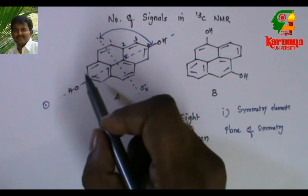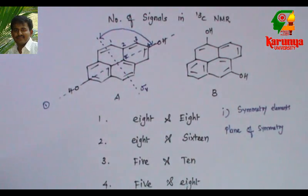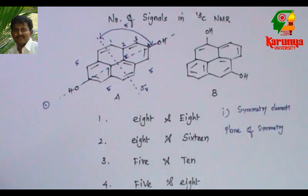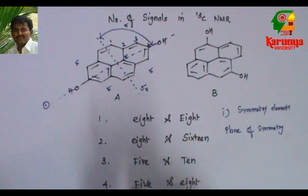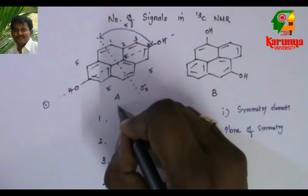You can try here also. It will be the same. One, two, three, four, five. Similarly here. So the number of signals in the C-13 NMR will be five for this compound.